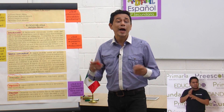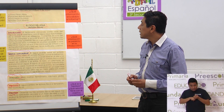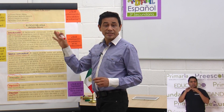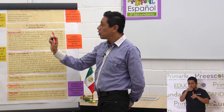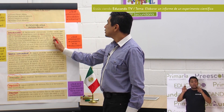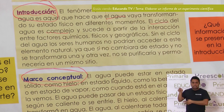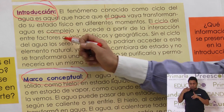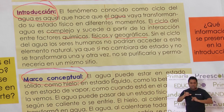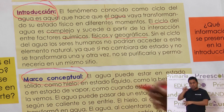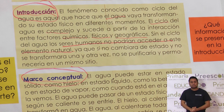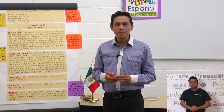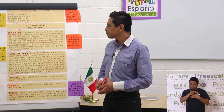¿Qué información se presenta en la introducción? Nos está dando varios datos acerca de lo que se va a tratar el tema: es acerca del agua, que ya nos había dicho el título y el subtítulo; que es un ciclo complejo que sucede a partir de tres interacciones, químicas, físicas y geográficas; y además nos dice la importancia del ciclo del agua, que es que el ser humano no podría acceder a este elemento natural si no existiera.